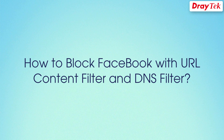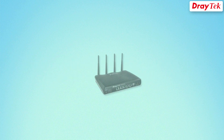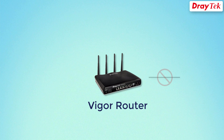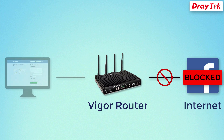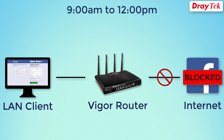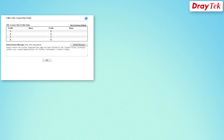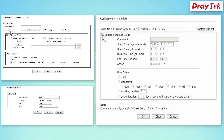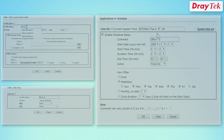Welcome to Draytek Tutorials. In this video we will show you how to configure the Draytek Vigor Router firewall to block access to Facebook and the Facebook app during working hours, such as from 9 a.m. to 12 noon and from 1 p.m. to 6 p.m. To achieve this we will use the URL filter, DNS filter, and the scheduled function in the firewall configuration. So let us begin.